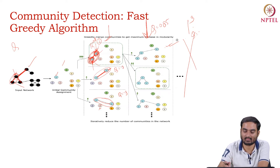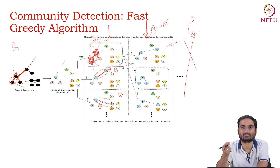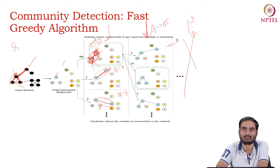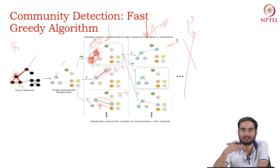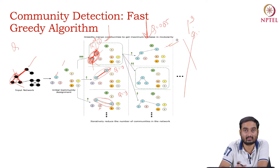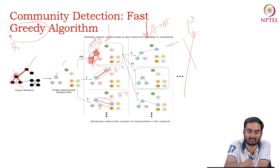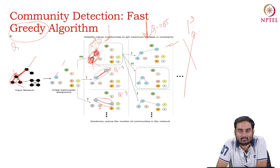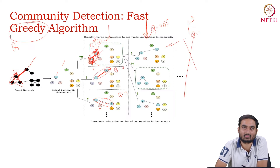This is the first step. We then take another seed node which has not been encountered so far and repeat the process. We keep repeating until all nodes have been encountered and the Q value reaches its maximal value. This is the greedy algorithm — fast greedy — and there is no guarantee it will reach the optimal solution or maximum Q value, but in practice it works pretty well.